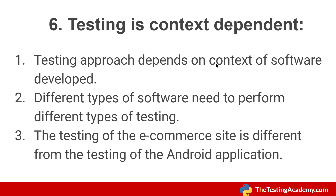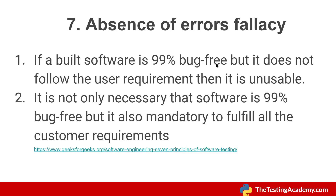The sixth principle is that testing is context dependent. The testing approach depends on the context of software development, and different types of testing need to be performed for different software. For example, testing an e-commerce site is different from testing an Android application. An e-commerce site involves purchase mechanisms as a web application, while an Android app involves testing under conditions like 3G, 4G, and no network connection.